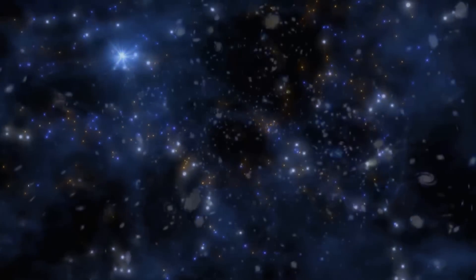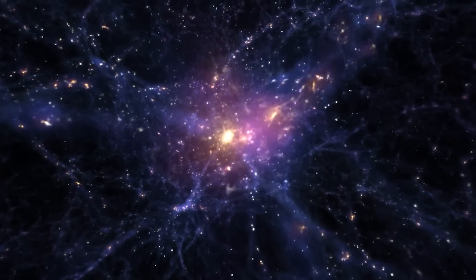The Hercules supercluster forms part of the edge of the void, and there are 60 observed galaxies within the void itself, and these galaxies form a rough tube through the center of the void.